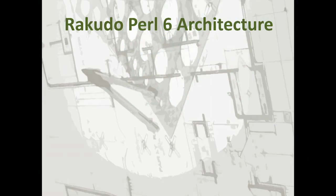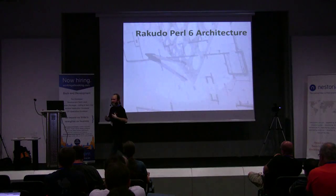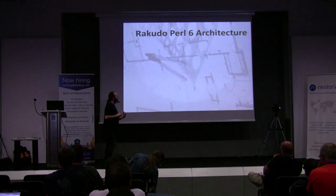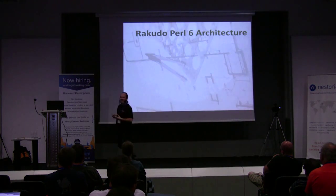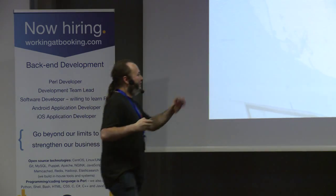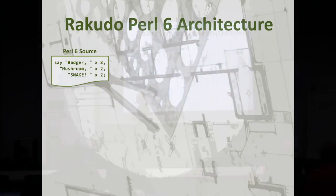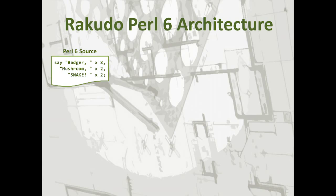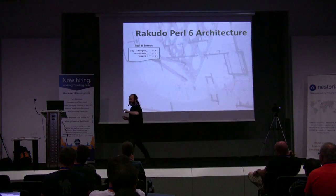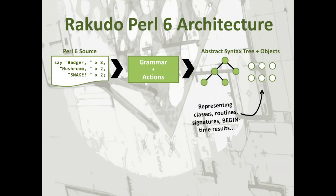Before we look at the details of the work we've been doing, I need to give you Jonathan's five-minute compiler school. Compilers are actually pretty easy until you actually get into the details, and then they're not very easy. So here's a little Perl 6 program, and we feed it into the compiler. This is text, and as a compiler writer, I think text sucks. The very first thing I do is get it out of text form and into a nice data structure — in fact, a tree. We call it an abstract syntax tree because it's abstracted away from the details of the syntax.